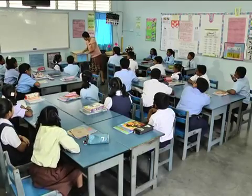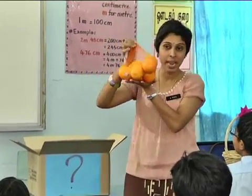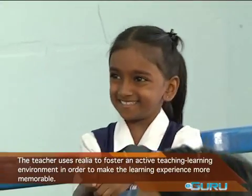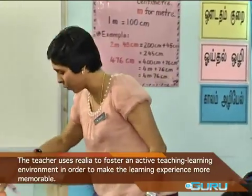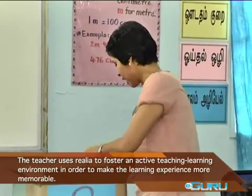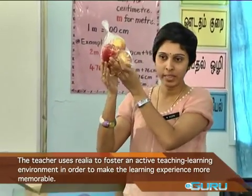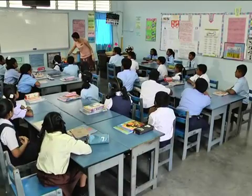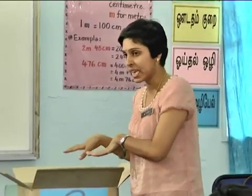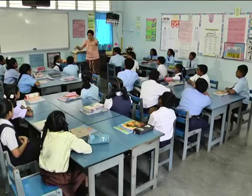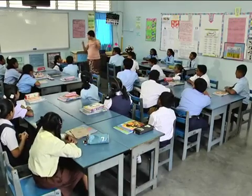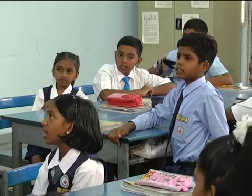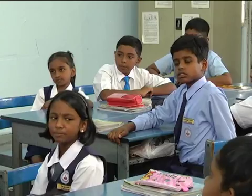For the first item, what do you see in my hands, children? They are oranges, teacher! That's right, they are oranges. For the next item, now what do you see? Apples! Yes, that's right, they are apples. Now for these items, I want these two groups to answer. Are you ready, children? They are sweets and chips.